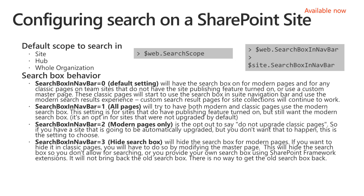Zero is the default setting, which is the behavior where we try to upgrade team sites that don't have publishing turned on or a custom master page — the search box moves to the top. Sites with publishing turned on or a custom master page see no change. Option number one covers all pages including classic pages and is an opt-in for sites that didn't get upgraded automatically, helping them move to the model of always using the search box in the nav bar.